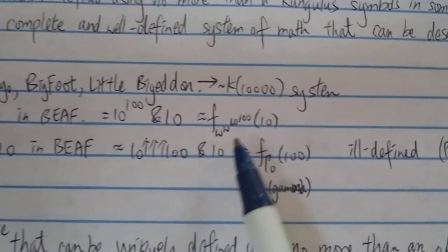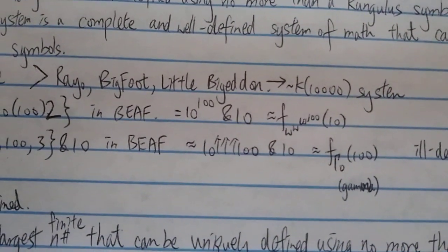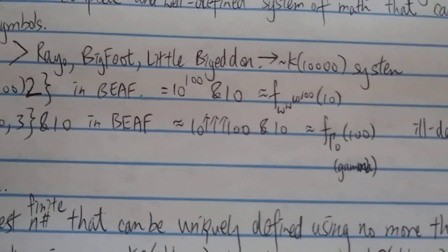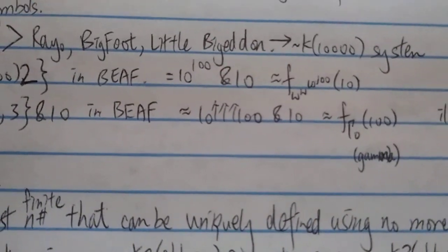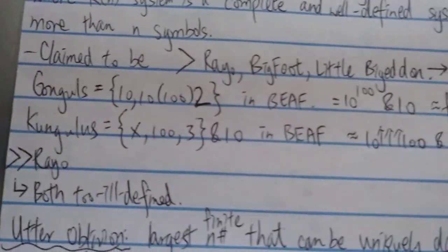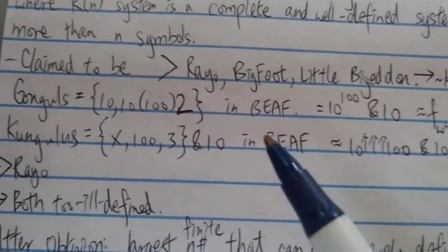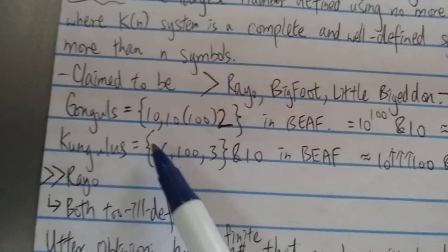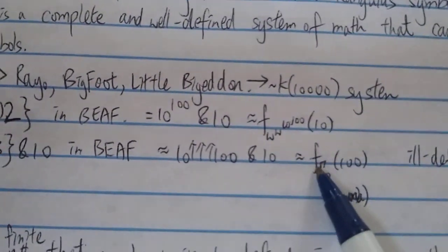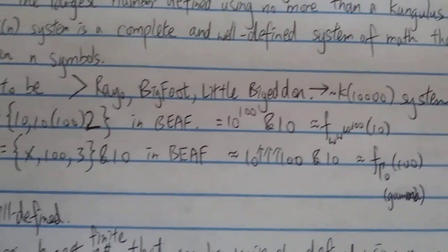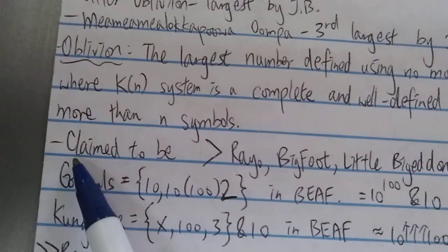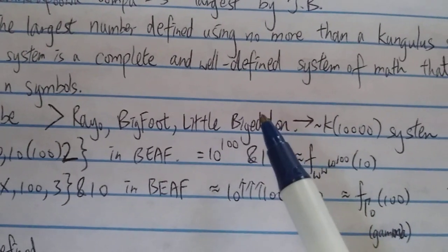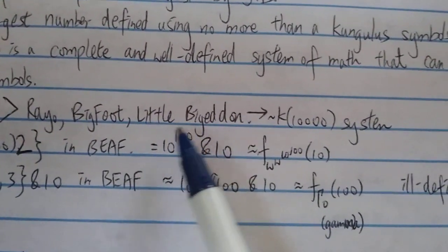And basically what it means is using this many symbols to describe a language. So I guess it's trying to beat the first-order set theory used by Rayo's function, and it uses this many symbols, congulous symbols, so this number of symbols in that language. Therefore it was claimed to be way, way, way bigger than Rayo's number, even bigger than the Bigfoot or even the little bigeddon.